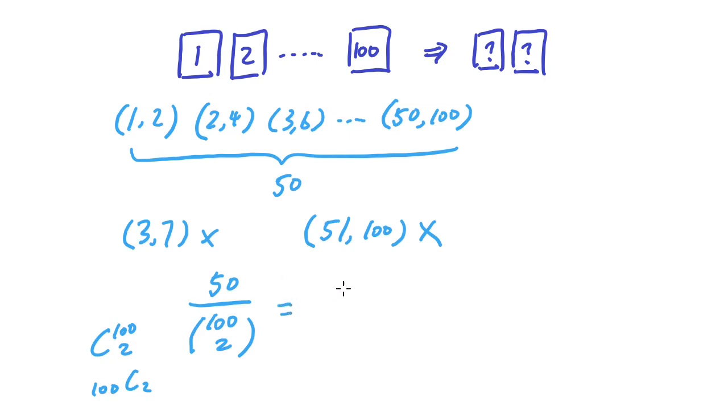These are all the same thing, but basically this equals 100 times 99 divided by 2. So the answer is going to be 1 over 199.